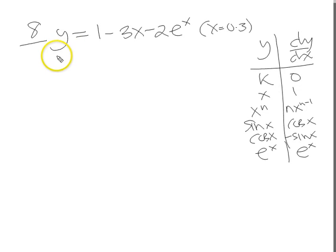Right guys, okie dokie, let's have a go at 8. y equals 1 minus 3x minus 2e to the x.